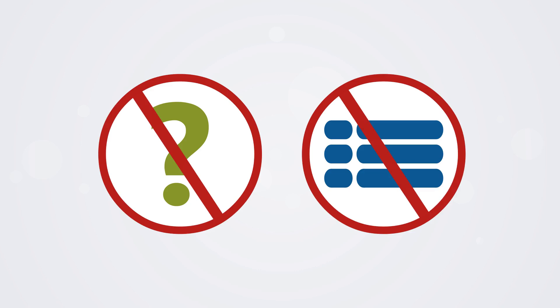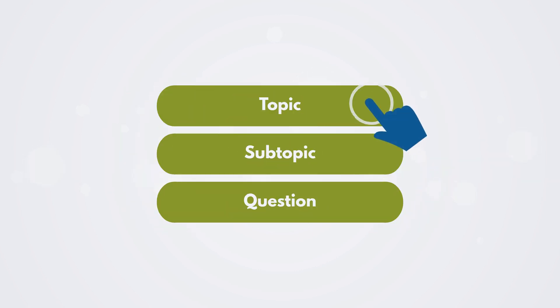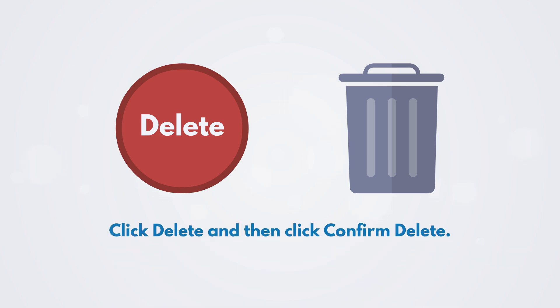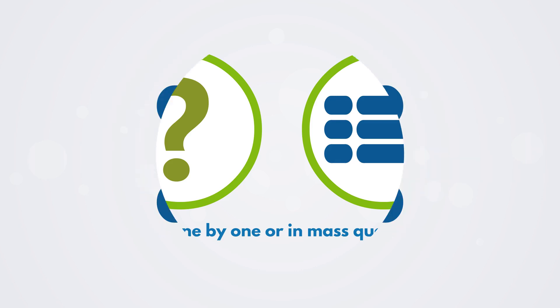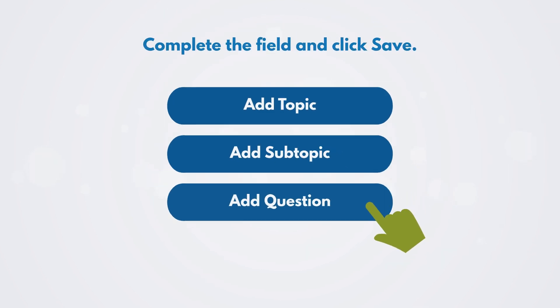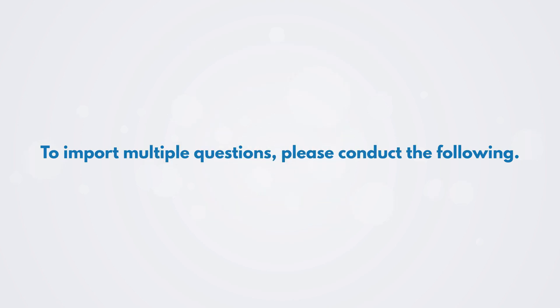You can then remove questions or entire sections from the template. To delete, select the topic, subtopic, or question and swipe left. A red button with Delete and a trash can icon will appear. Click Delete and then click Confirm Delete. You can also add questions or sections to the template one by one or in mass quantity. To add a single piece of information, click Add Topic, Add Subtopic, or Add Question. Then complete the field and click Save.